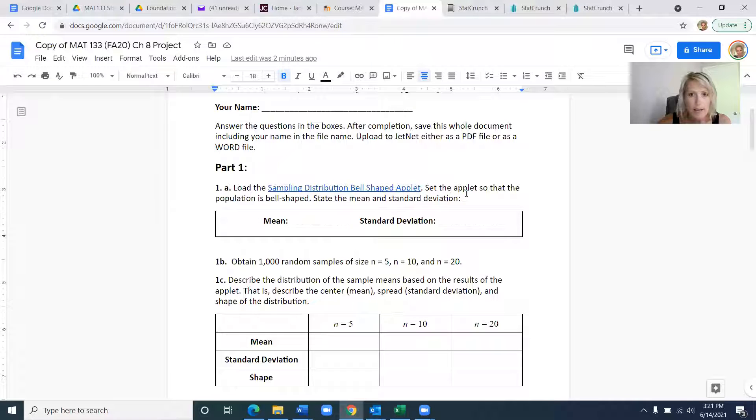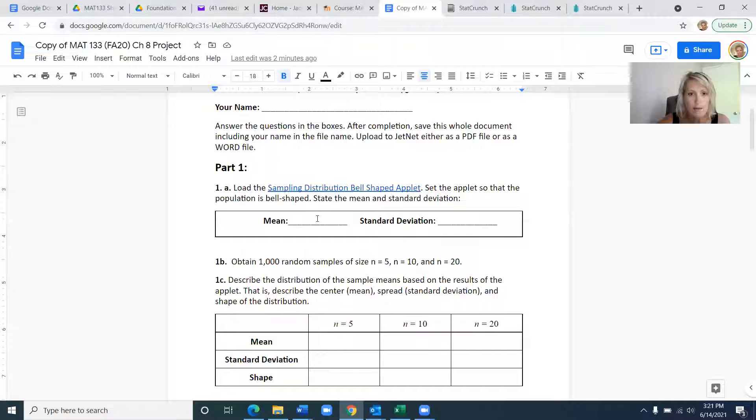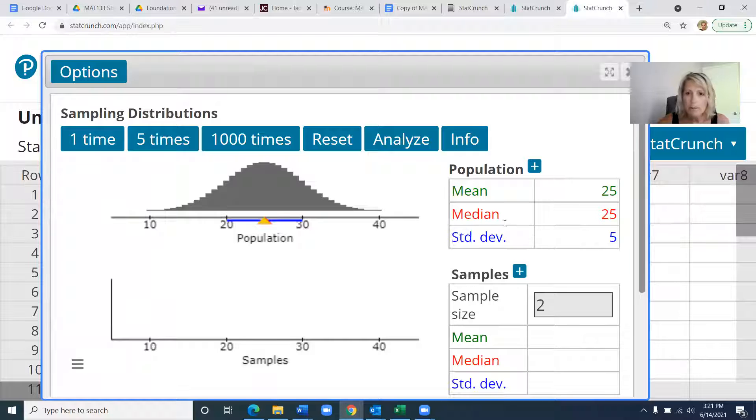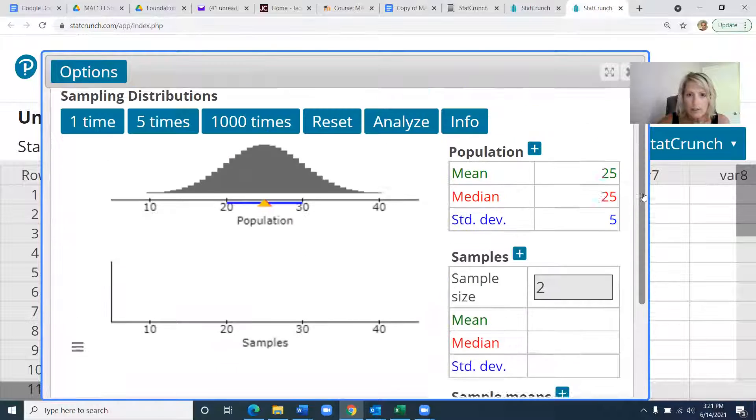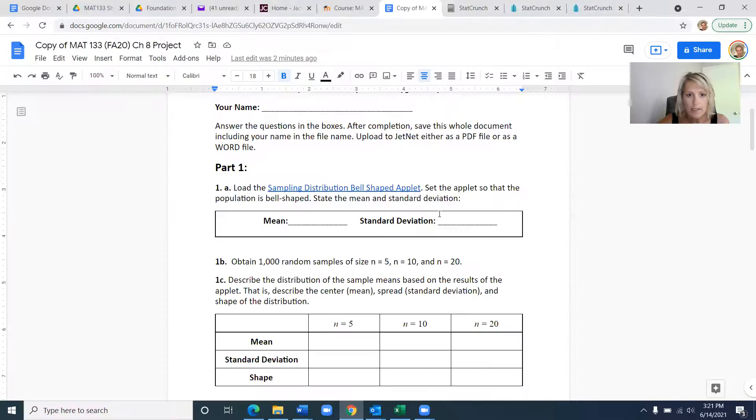It says set the applet so that the population is bell-shaped, state the mean and standard deviation. It says mean is 25, so just use the one that's there. Make sure that you state what you have right here in your project. You can see that the mean is 25 and a standard deviation is 5. There are three sections here in the project. The top one is the population. That's what you're writing on your project on the first line here.